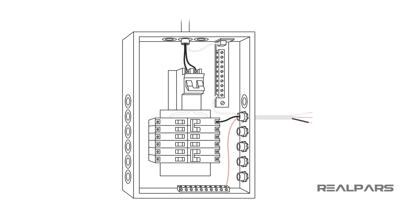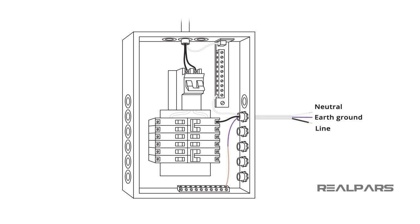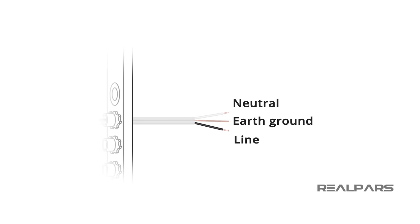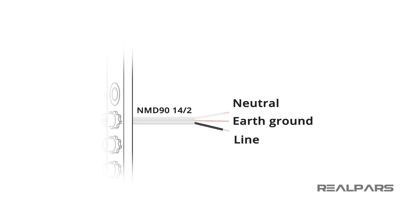In North America, the two electrical power supply wires are called Line and Neutral and originate from a circuit breaker in an electrical panel. The Line wire has black insulation and the Neutral wire has white insulation. The cable that leaves the electrical panel will contain these two wires plus a third wire which is connected to earth ground. The earth ground wire has no insulation. The cable is referred to as NMD-90-14-2 because of the size of the conductors and the number of wires inside.